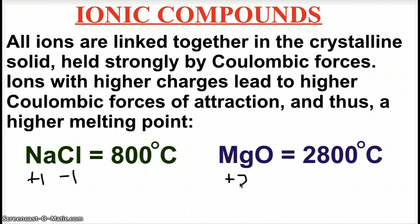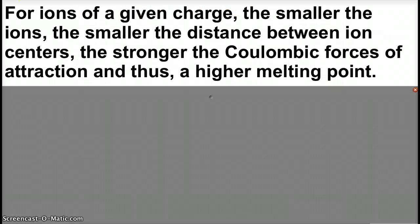Plus two, oxygen is minus two. Because of the greater magnitude of the charges, magnesium oxide has a higher melting point. We'll also see some other melting point trends for ions of a given charge. The smaller the ions are, the smaller the distance between ion centers.